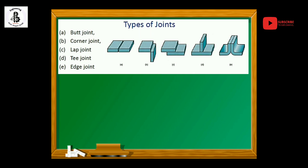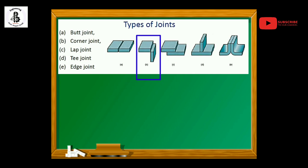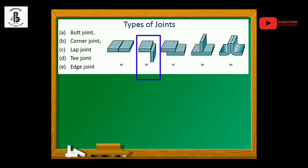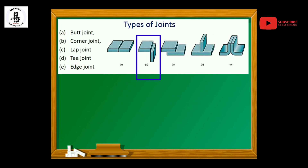The second one is the corner joint. As per the requirement of joining two plates at one of their corners, that will be another type of joint known as a corner joint.